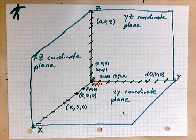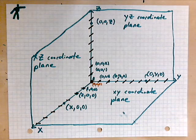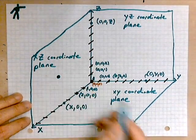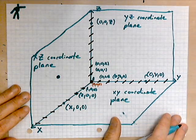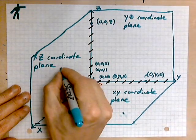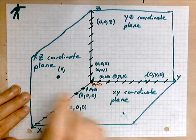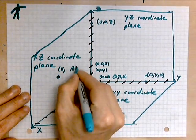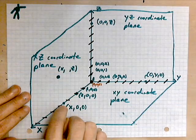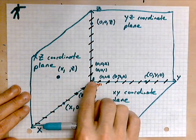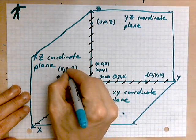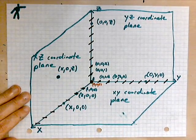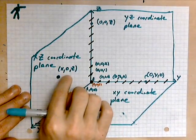So take a look. If I locate a point in the xz coordinate plane, such as this point here, then the x coordinate is specified as x. The z coordinate is specified as z. But the y coordinate, because we are not along the y axis at all, is zero. So in the xz coordinate plane, any point has coordinates x, zero, z.